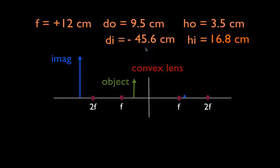We said the object is inside of F. The image distance better be more than the object distance, which it is. And the object better be right side up, which this indicates that it is. And it better be bigger. It's 16.8, this is 3.5, it is bigger. So we feel very confident that we got the right answers there.